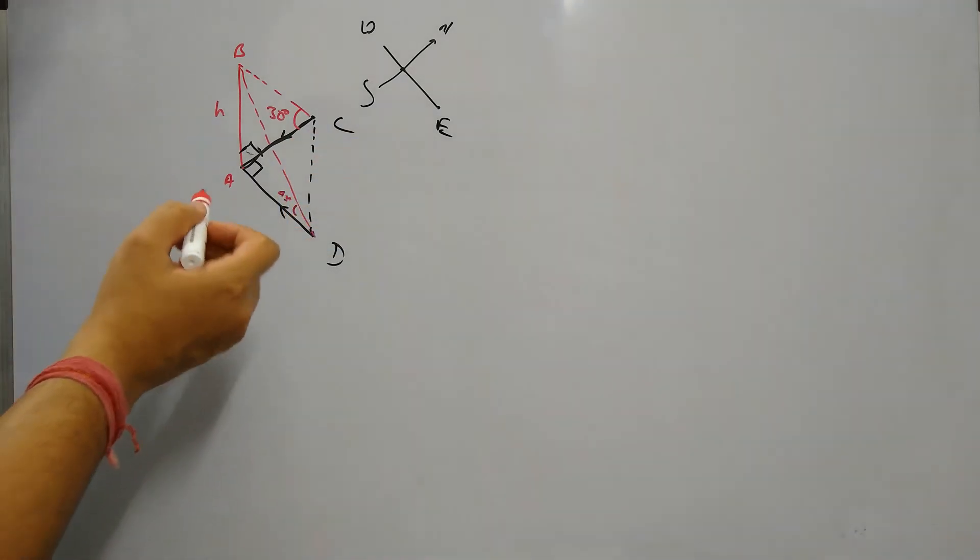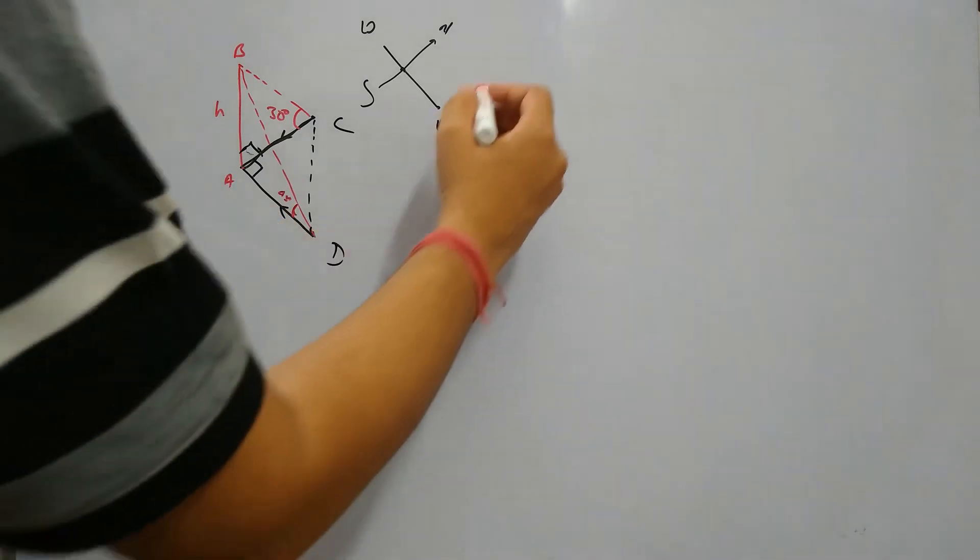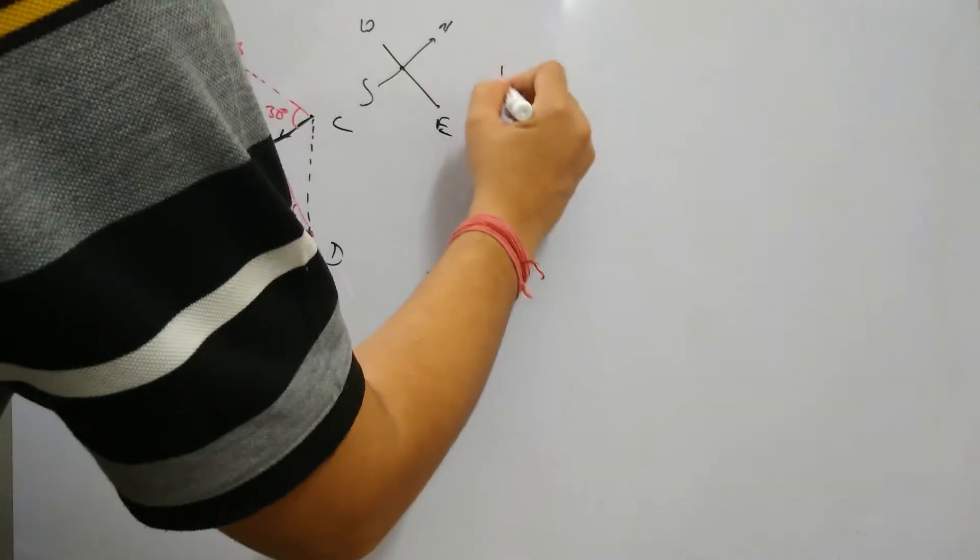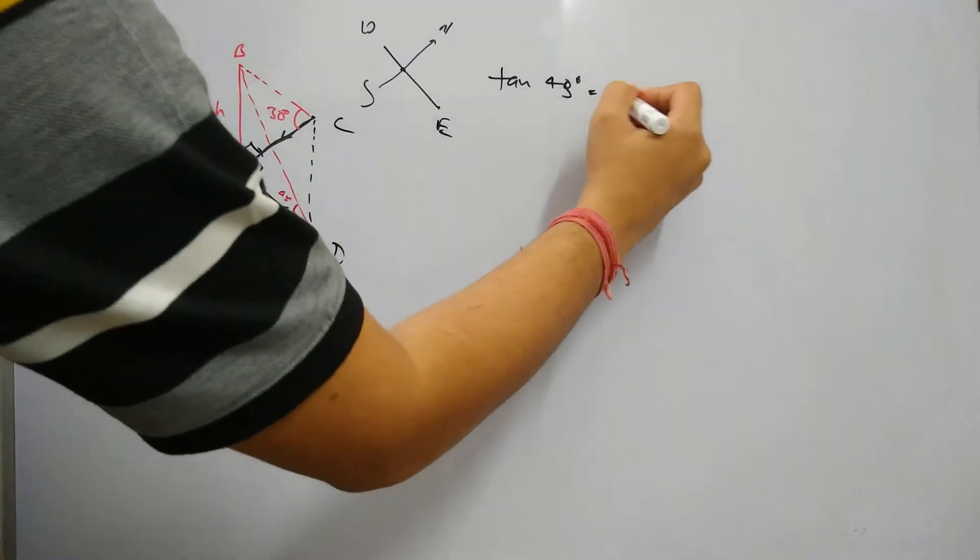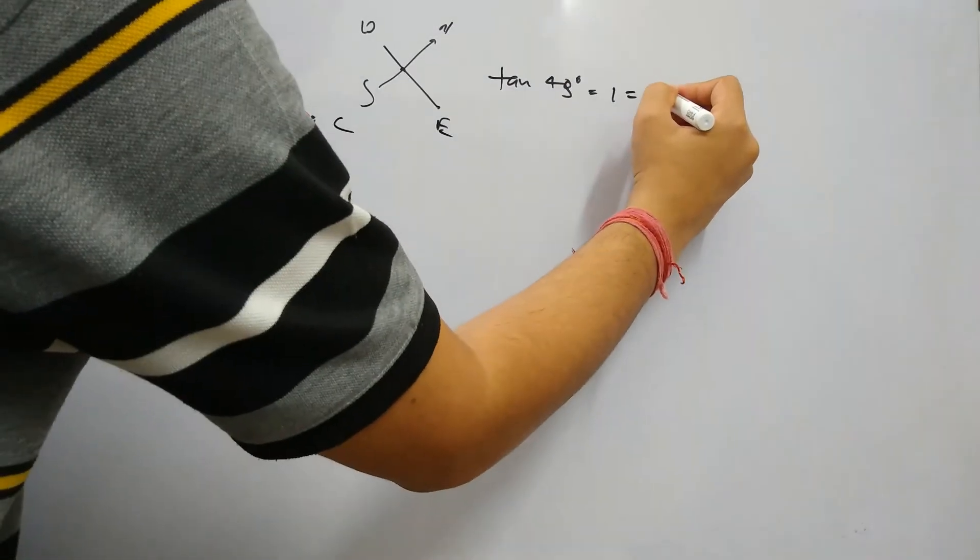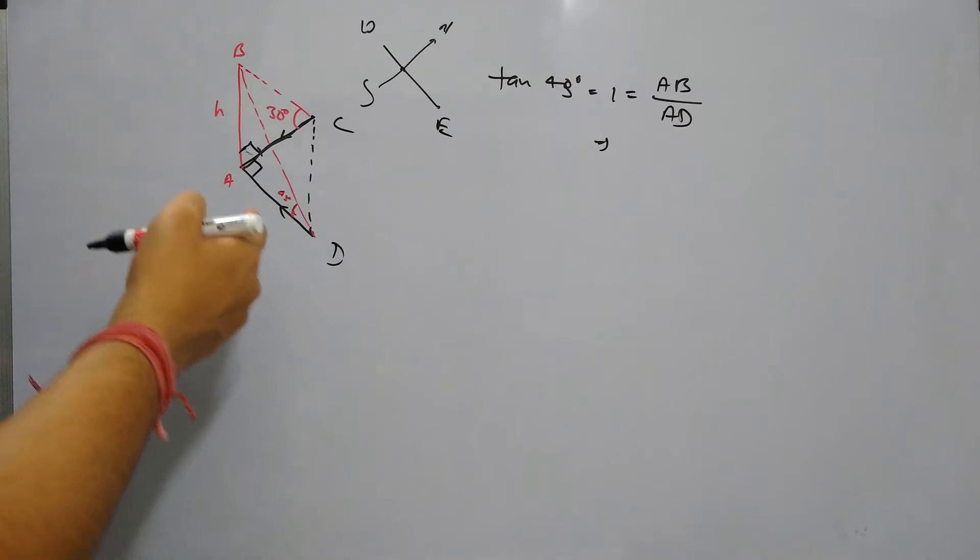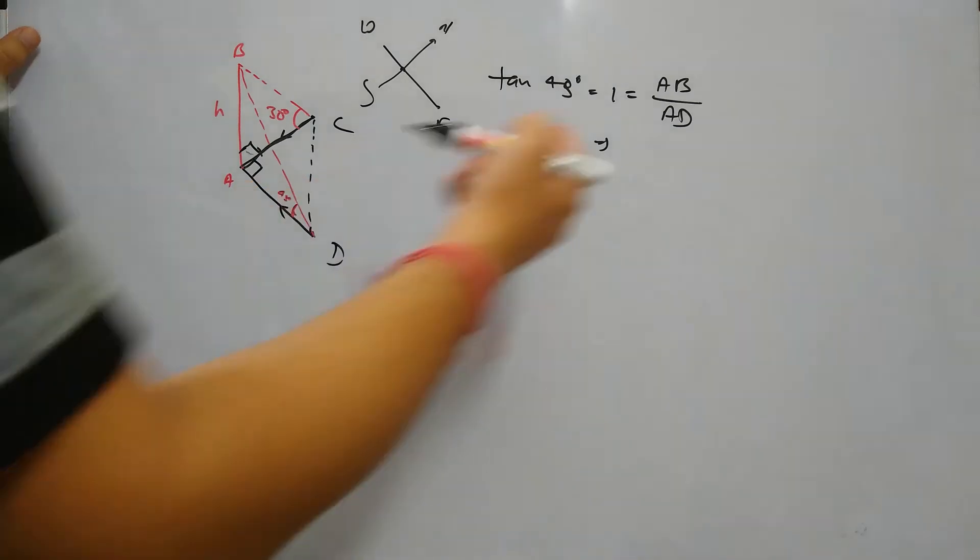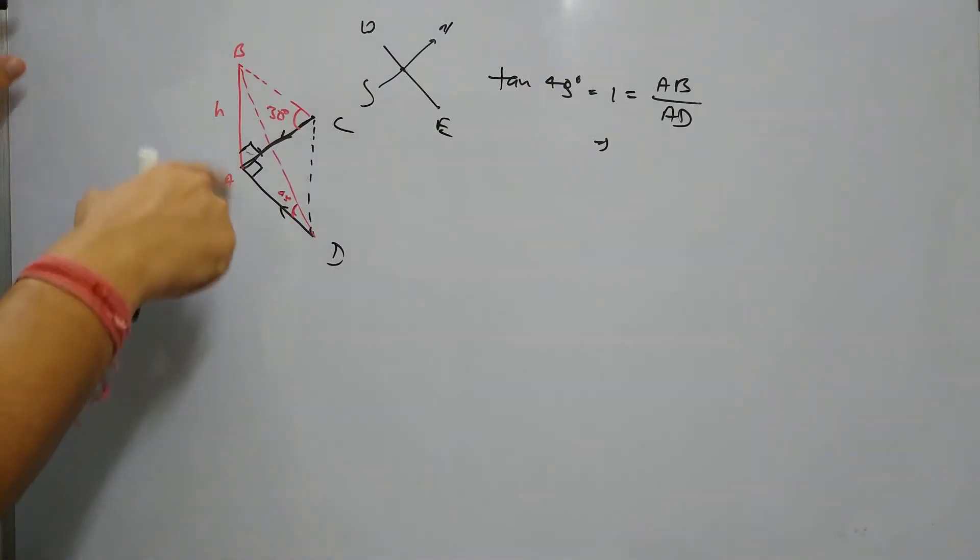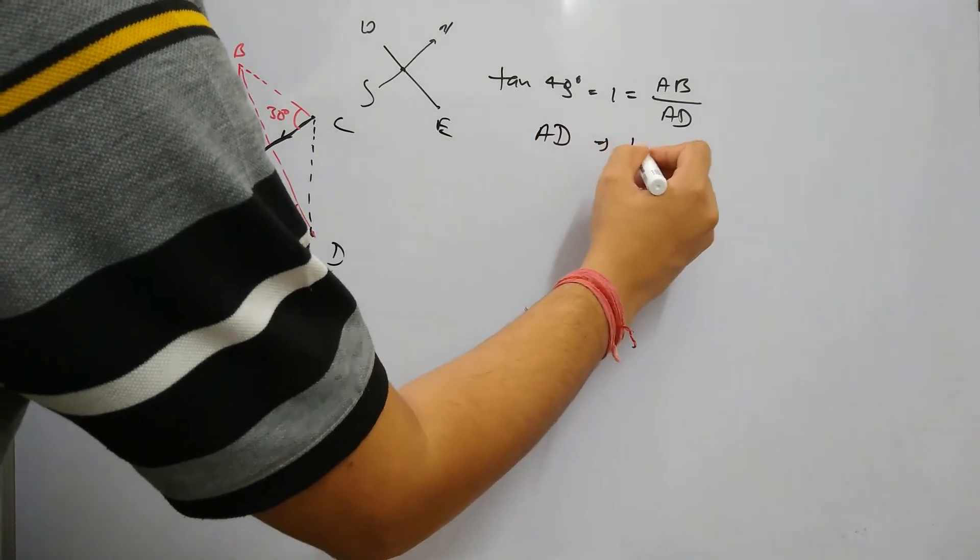So if you just see triangle A, B and D, angle D is 45 degrees. So if we take tan 45 degrees, tan 45 is 1, so AB equals to AD. In fact you can remember this in any case - whenever this angle is 45 degrees, then both sides will be equal. So in this case AD is also equals to H basically.